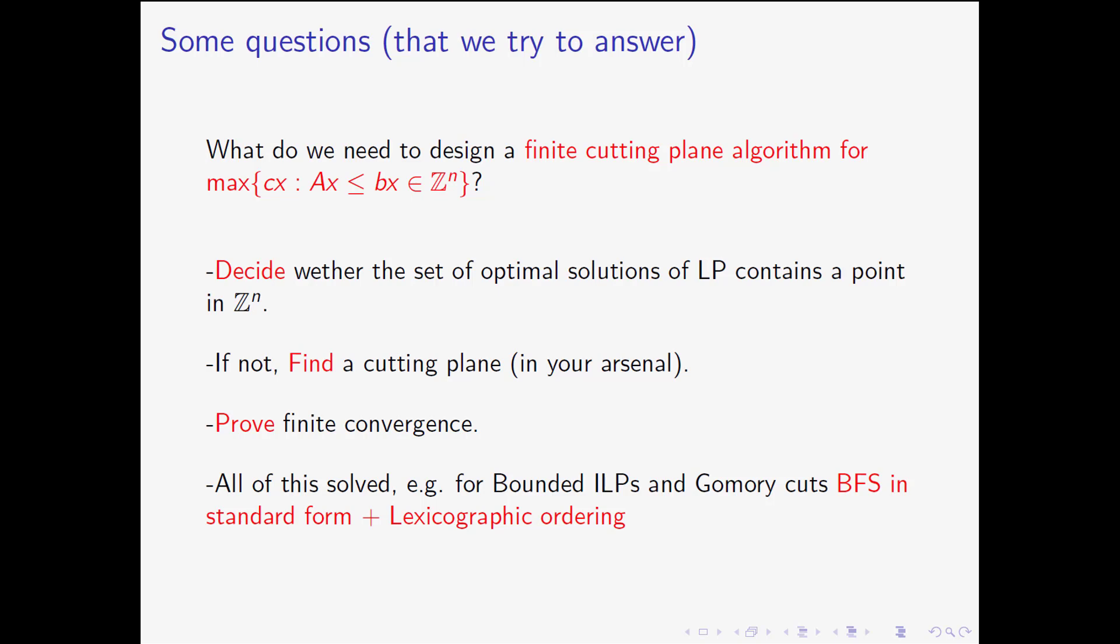And once you've decided that you can cut off something, you have to find a cutting plane in your arsenal, which is now growing with lots of research. And then you need to prove that your algorithm terminates. All of these are hard questions. In fact, everybody knows the Chvátal cuts, the Gomory cuts. Even if this set is a rational polyhedron, pointed, and you have a vertex, I think that in order to cut off this vertex you need to do Hermite normal form. You need an arsenal that is highly non-trivial.